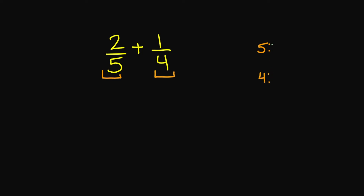Let's get all the multiples of 5. So we have 5, 10, 15, 20, 25 — let's stop here for now. And for my 4s: 4 times 1 is 4, 4 times 2 is 8, 4 times 3 is 12, 4 times 4 is 16, 4 times 5 is 20. The common multiple between 5 and 4 is 20.